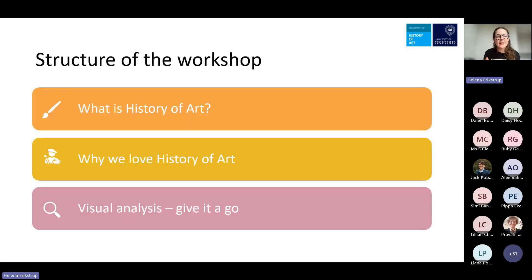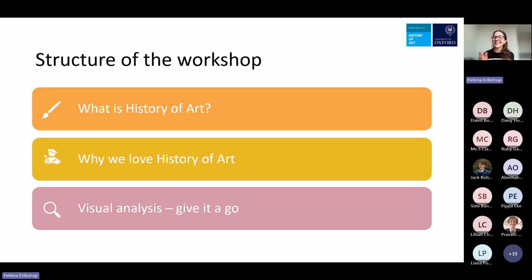The structure of the workshop is: first we're going to think about what history of art is, because just like many of you, I didn't really know what history of art was before I came to uni either. Then I'm going to talk about why we love history of art, why it's such a great subject, and why it might be interesting to look at art. Someone is saying in the chat they love art — that's a great starting point! And then for the majority of the time, we're going to do visual analysis, where we look at some art and you help me figure out what it's all about.